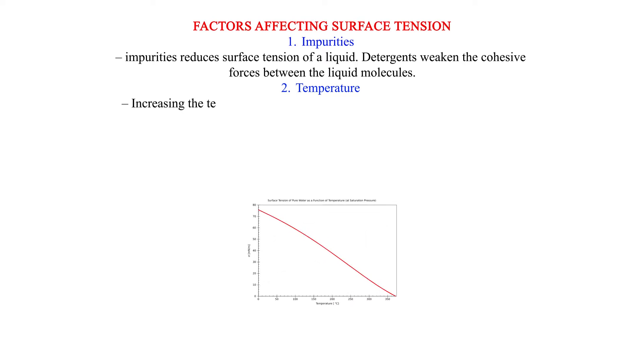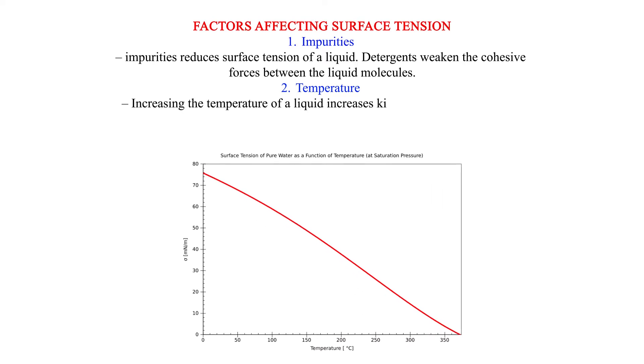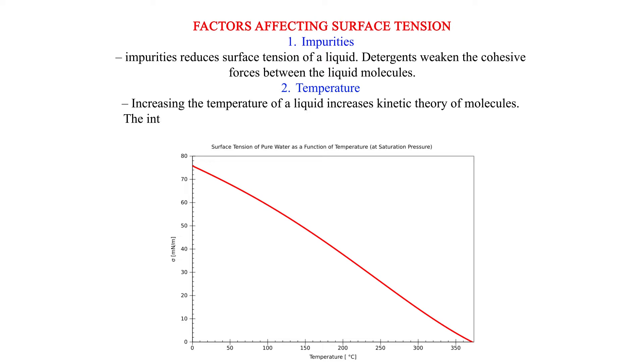2. Temperature. Increasing the temperature of a liquid increases kinetic theory of molecules. The intermolecular distance increases and the force of cohesion is decreased, hence surface tension is lowered.